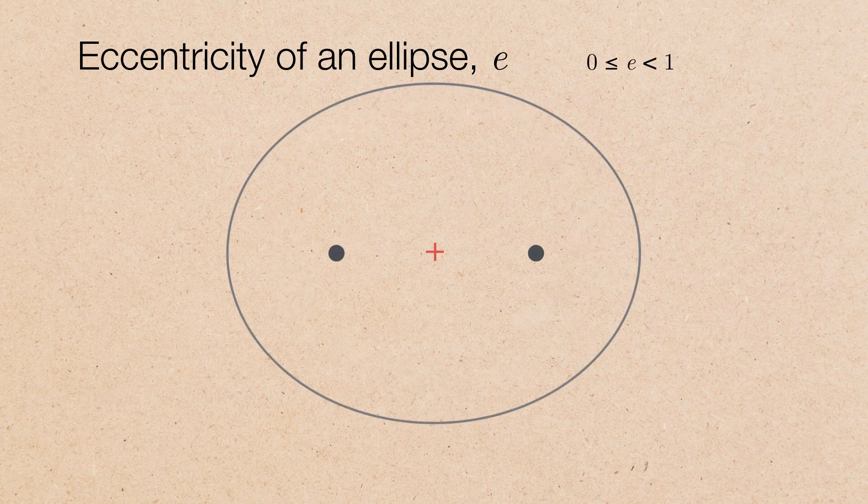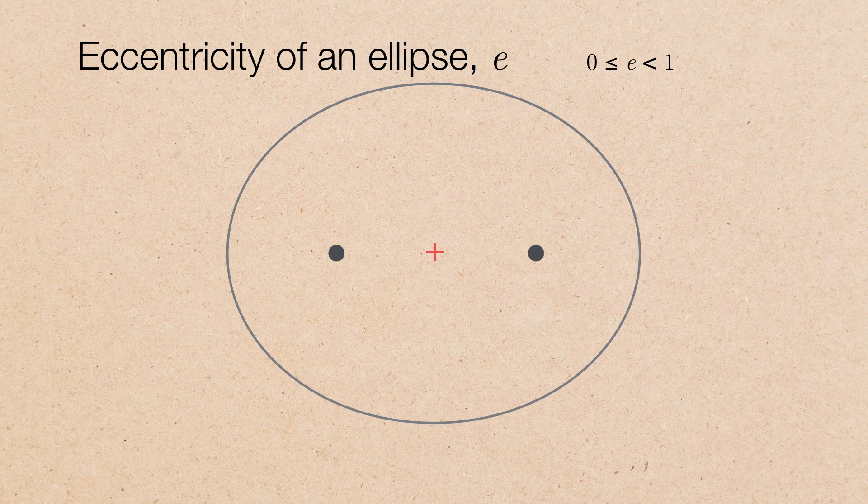To calculate the eccentricity, it's really quite simple. What you can do is take half of the major axis, that is the semi-major axis, and then you can go from the geometric center to either of the two foci. We call that lowercase letter c, and then just take their ratio to give the eccentricity.